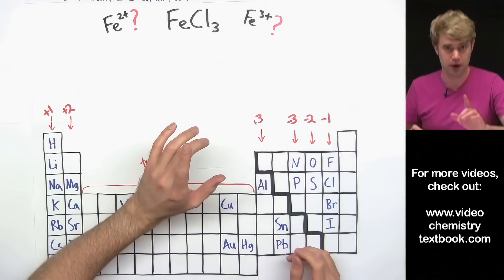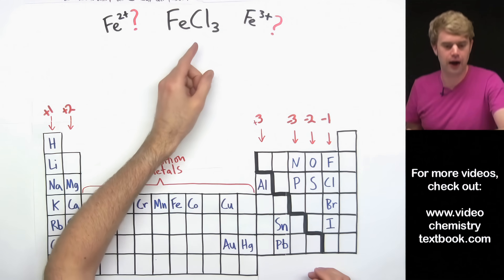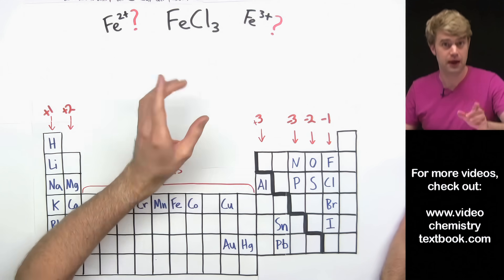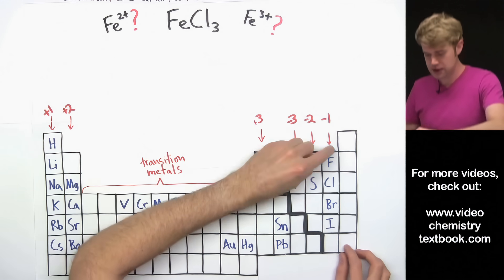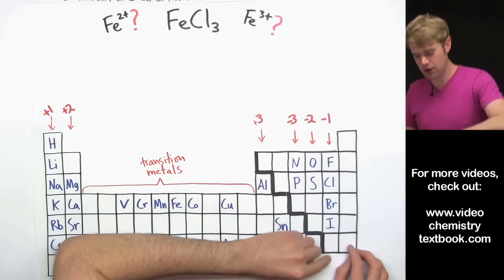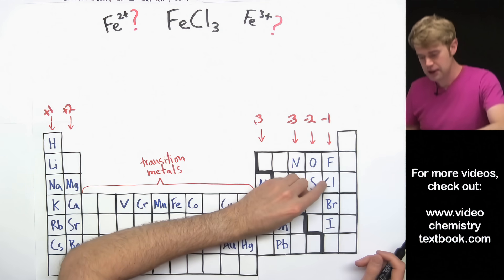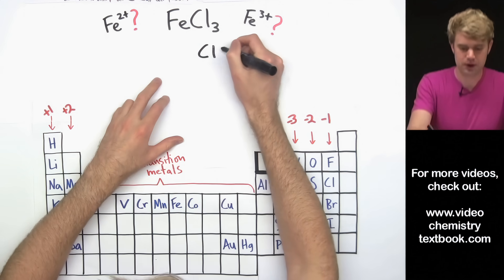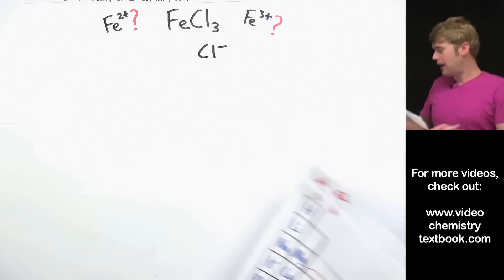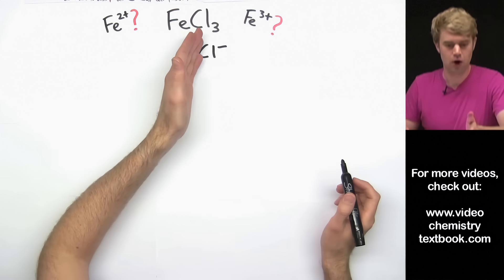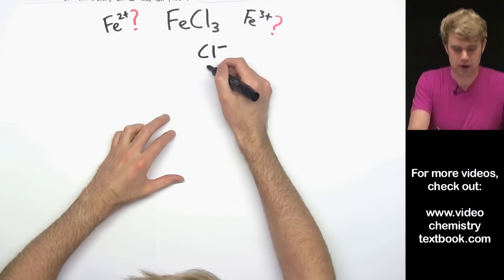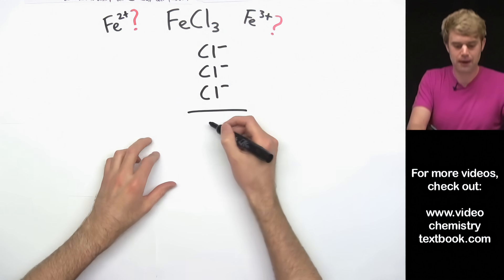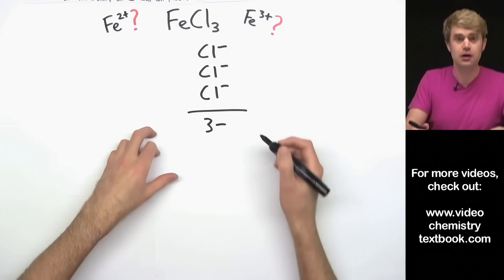To find the charge of a transition metal, we start by focusing on the ion with a charge that we do know — that's certain and not going to change. For FeCl3, that's going to be Cl. Cl is in the column on the periodic table where we know that in an ionic compound, Cl always makes an ion with a 1− charge. We have 3 Cls, so the total amount of negative charge is going to be 3−.